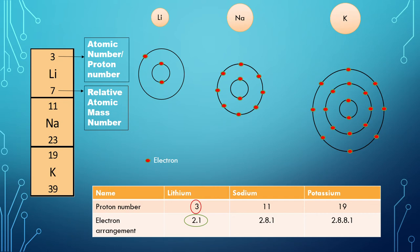Now let's have a look at the sodium having proton number 11. The electron arrangement is 2.8.1. While potassium having proton number of 19 has electron arrangement of 2.8.8.1.